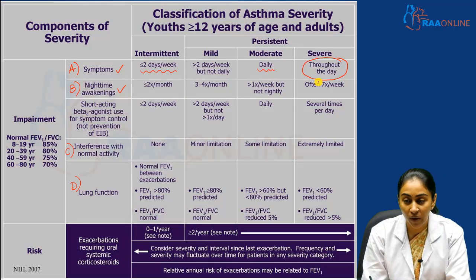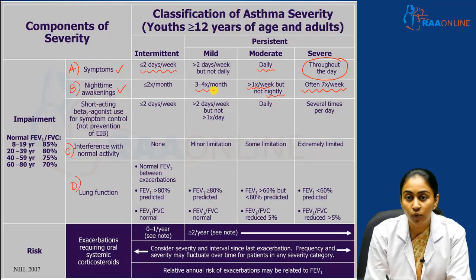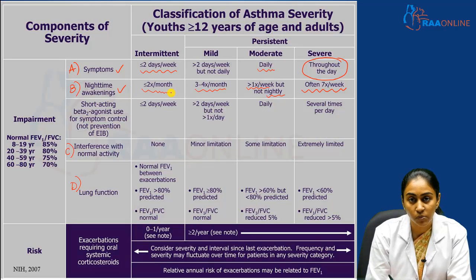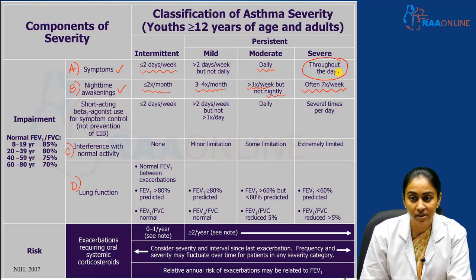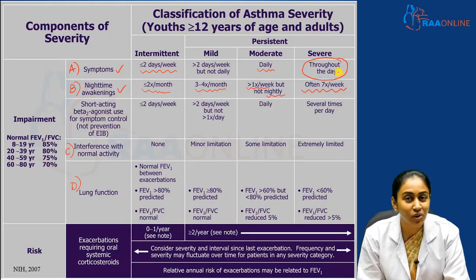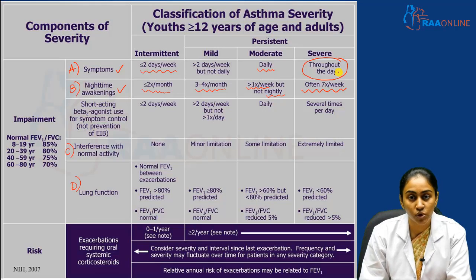For nighttime awakenings: seven nights per week is severe persistent. More than once a week but not every night is moderate persistent. Three to four times a month is mild persistent, and two times or less per month is intermittent.